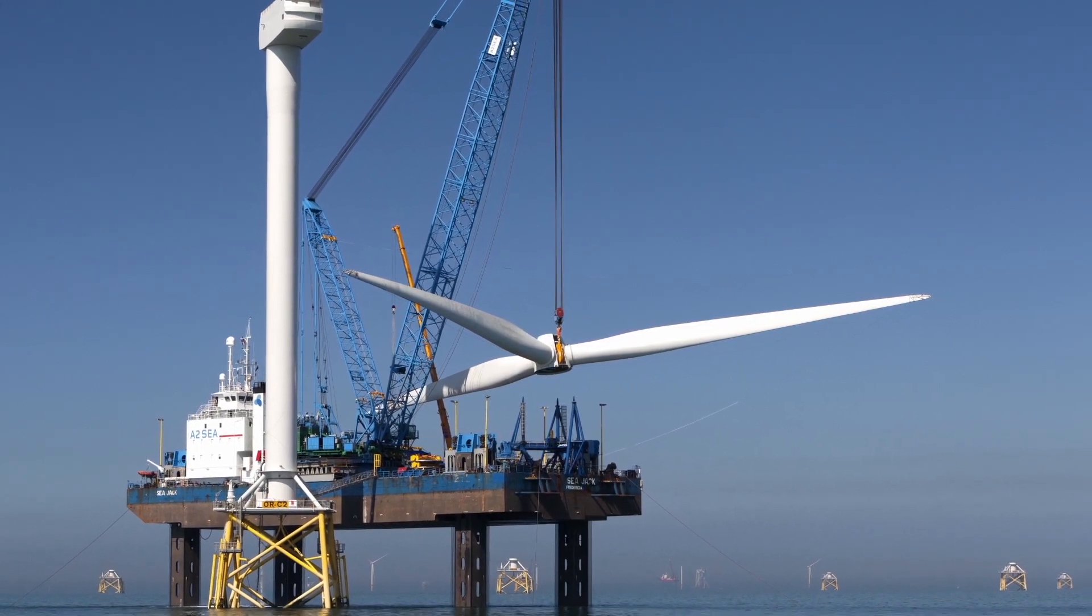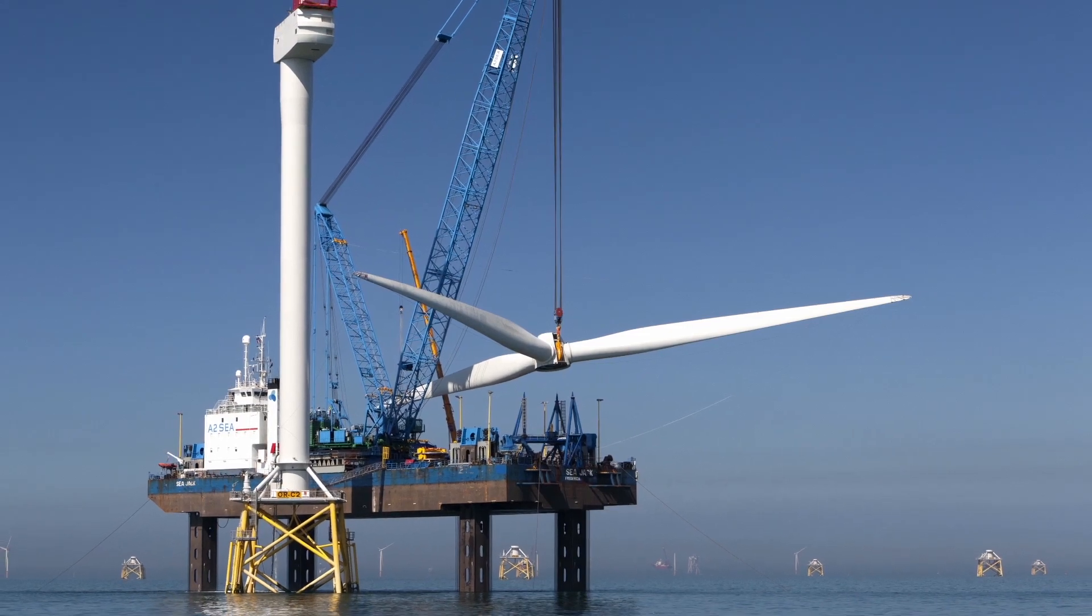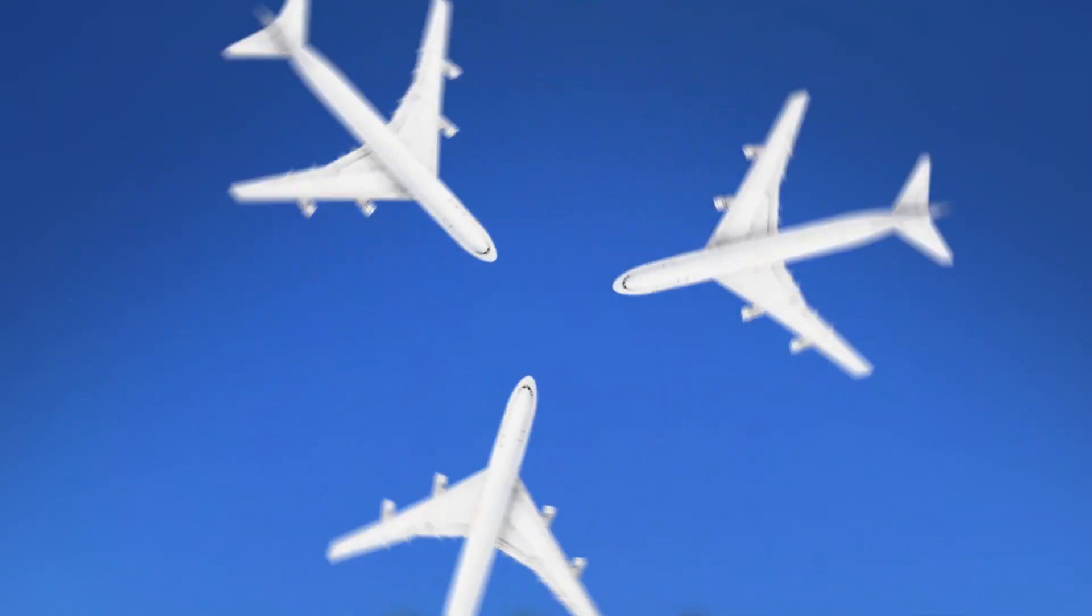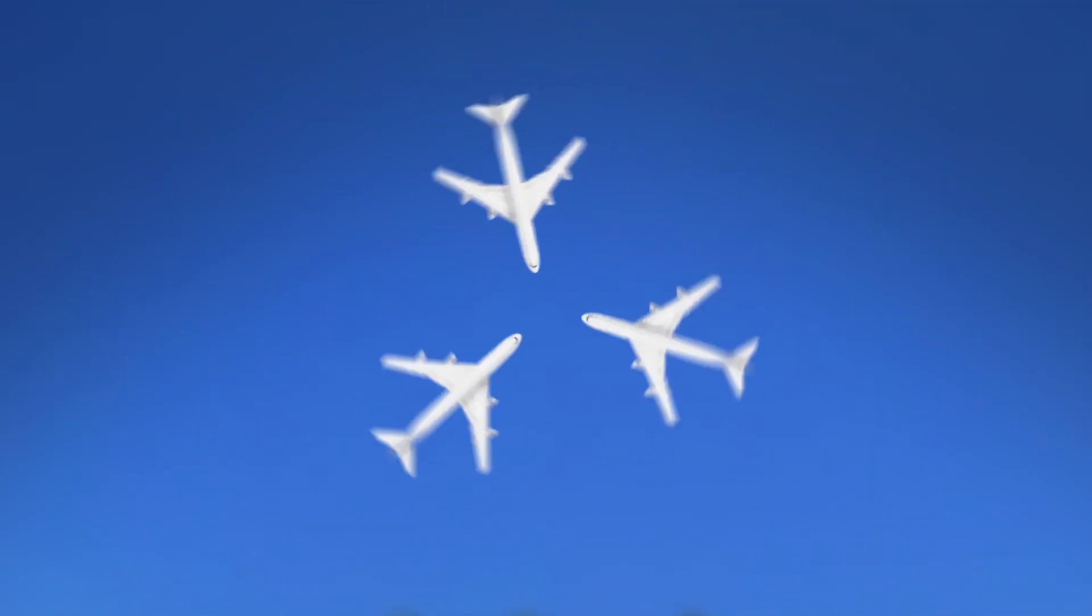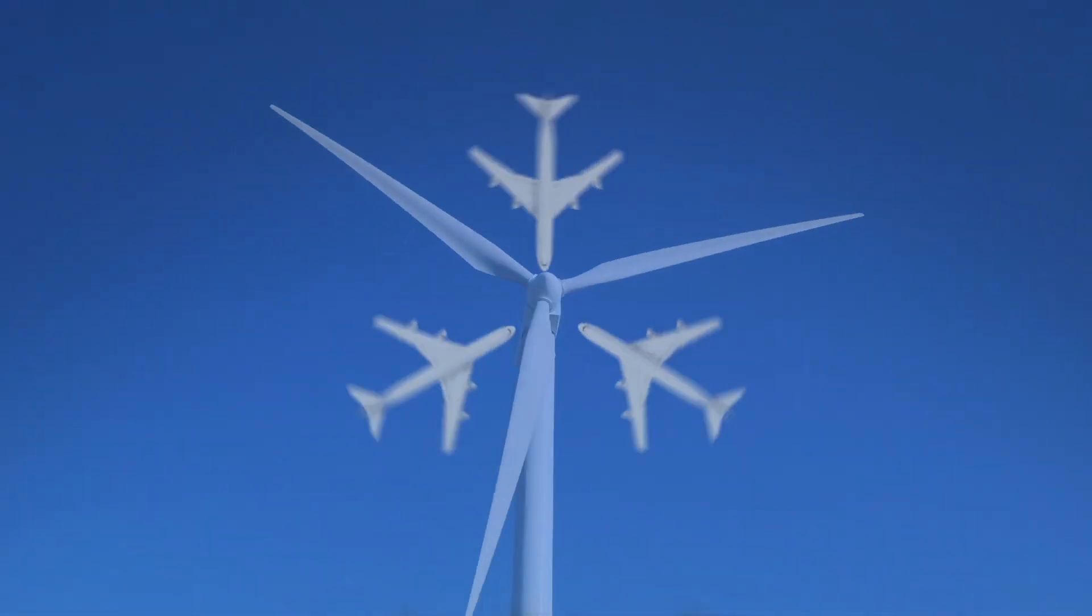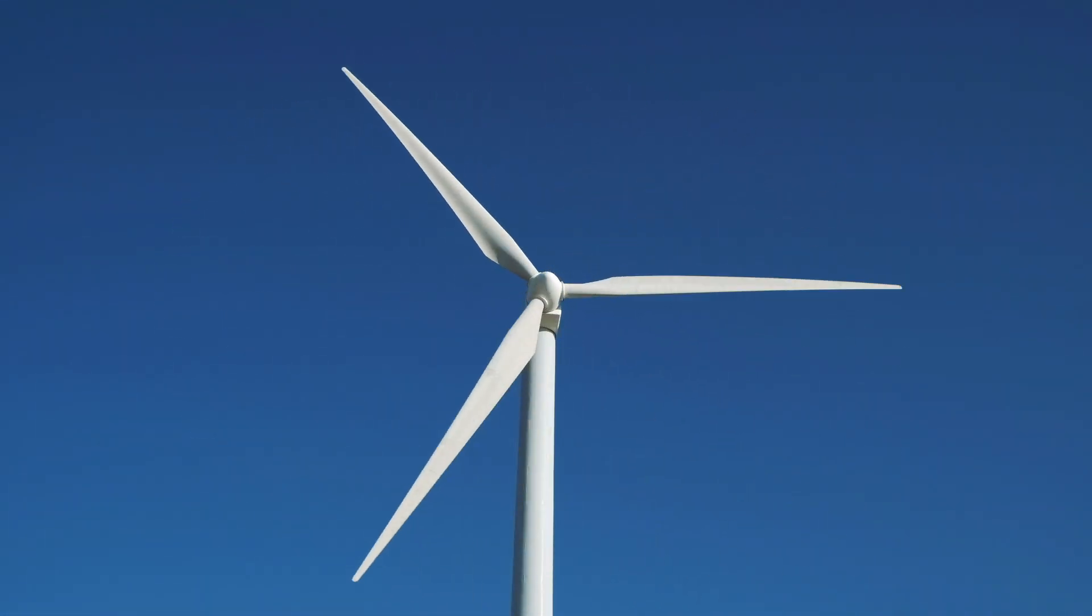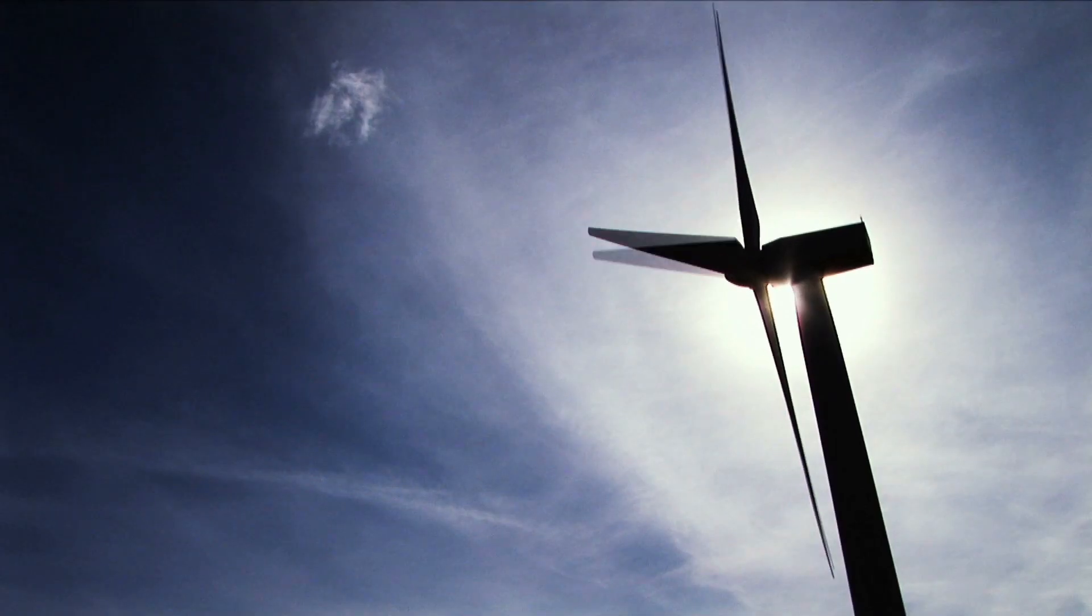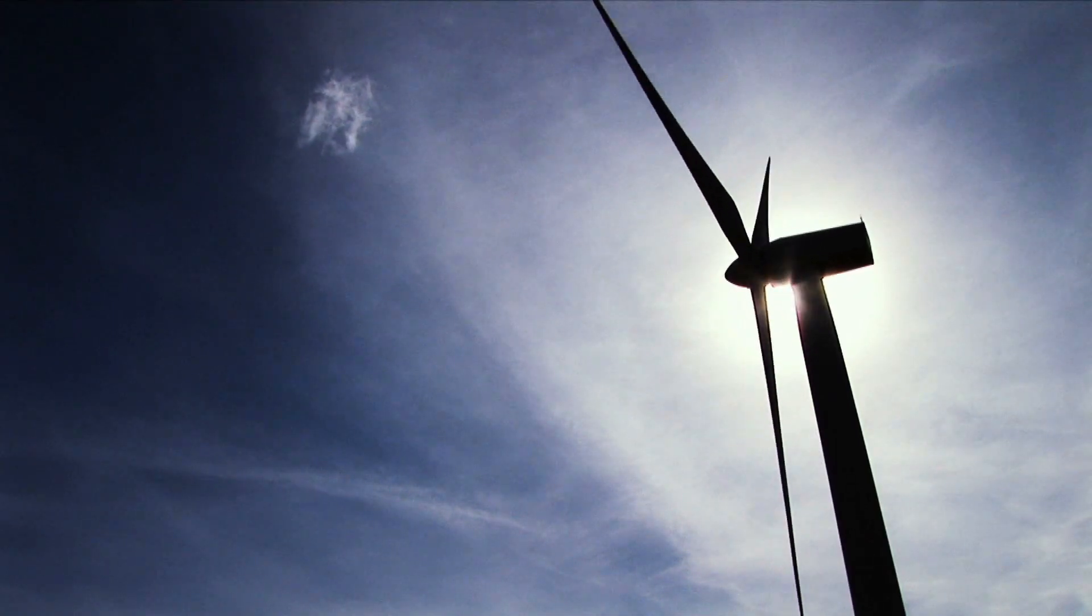The Boeing 747 from the back end to the nose is only 70 meters. So you can envision three Boeing 747s rotating around this hub 35 stories above the ocean. This swept area creates a tremendous amount of power.